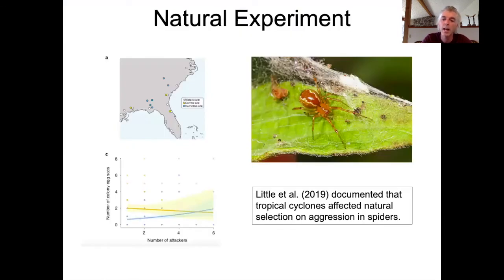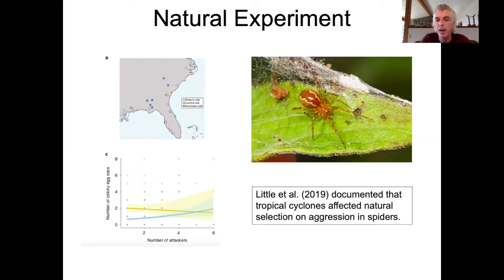For example, Little et al. recently documented that tropical cyclones affect natural selection on aggression in social spiders. What they did was try to predict where cyclones were going to hit in order to sample populations before and after the cyclones in places where they hit and where they did not. The trouble with natural experiments is that despite our best efforts, the treatments are not applied randomly by the experimenter. As a result, we can never know for sure whether the effects we're seeing were due to the natural event or whether they could be confounded by some other factor.